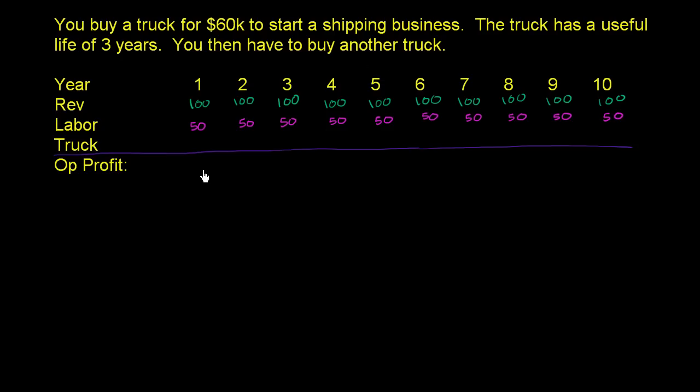So what I've done here is I've drawn a series of income statements for our shipping business. This is year one, year two, year three, year four. This is the revenue that we make in each of those years. It's a business that right from the get-go we start making $100,000 a year. This is all in thousands. We just keep making $100,000 a year in revenue for the first 10 years.